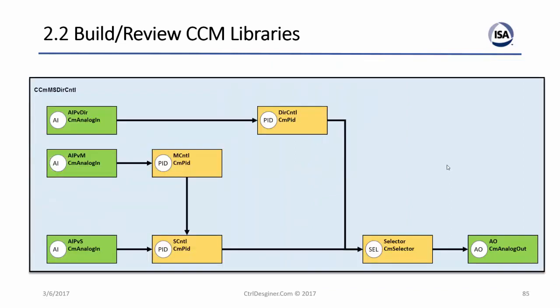The same concept applies to a complex control strategy. For example, we have a strategy with three measurements — two of which can be the same — going to a master controller and a direct level controller. The master controller controls the flow controller, which gets its AI from the process. We use three CM analog ins, three PID controller instances, a selector, and a CM analog out. By putting all of these under the CCM wrapper called 'MS direct control,' we can reuse this strategy repeatedly, just assigning the AIs and AO each time.